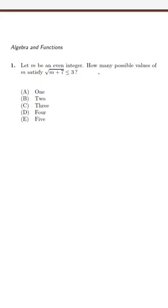Let m be an even integer. We need to find the possible values of m that satisfy √(m+7) ≤ 3. Before we start solving the question, we know that if we have a function like square root...